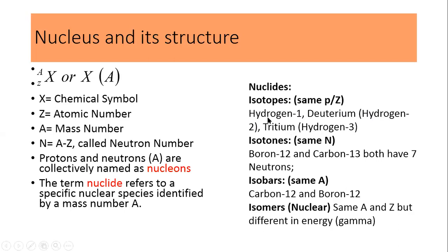Next are isotones — 'iso' means same, 'tones' means neutrons — so nuclides with the same number of neutrons are called isotones. For example, boron-12 and carbon-13 both have seven neutrons, so they are isotones of each other.